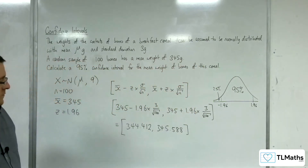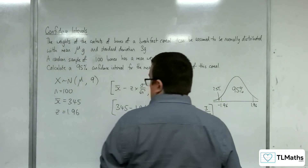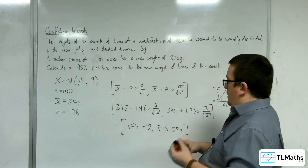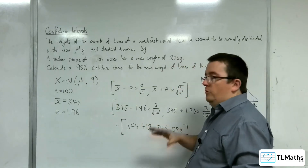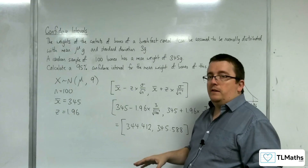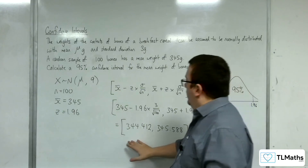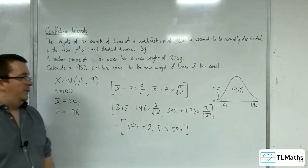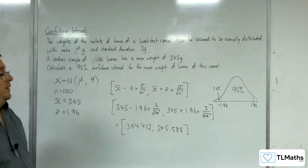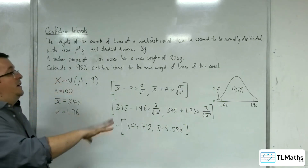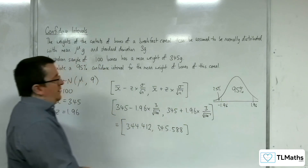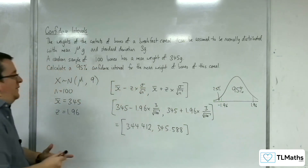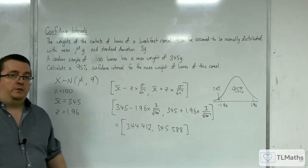We can be 95% confident that the true population mean will lie between those two values — not that there's a 95% chance, but that we can be 95% confident that it lies between those two values. And so that's how we can work out our confidence interval.